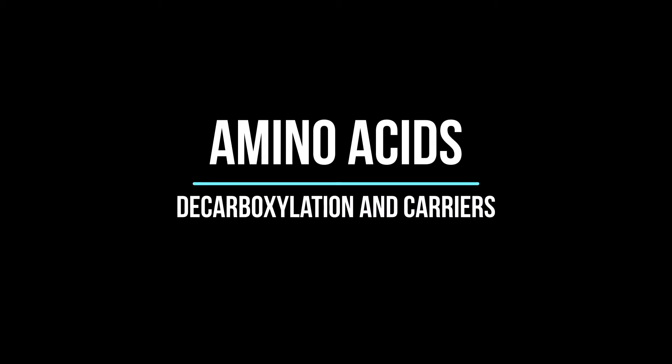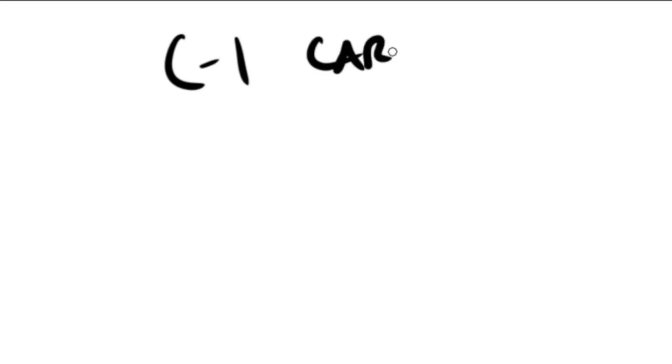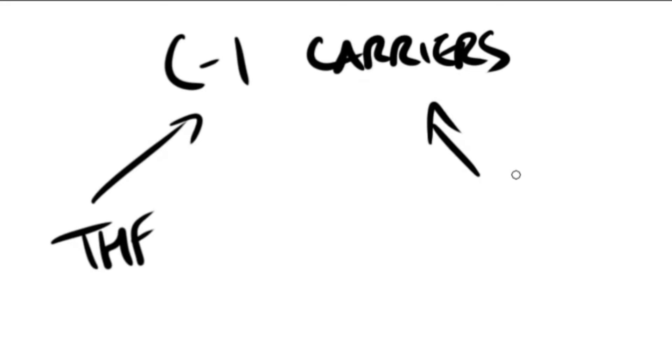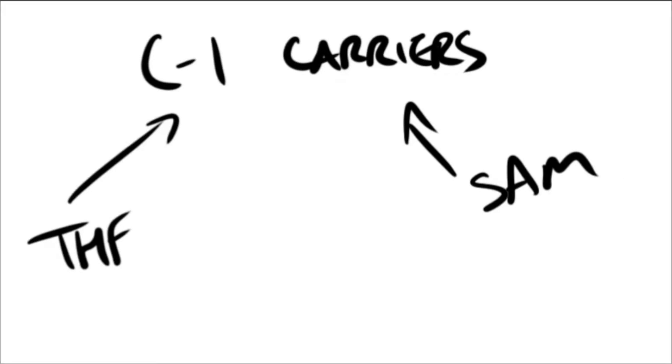Welcome to Leila Teachers. Today we'll speak about the decarboxylation of amino acids and some carriers. Some synthetic pathways require the addition of single carbon groups that exist in a variety of oxidation states, including formyl, methanol, methylene, and methyl. These single carbon groups can be transferred from carrier compounds such as THF, which is tetrahydrofolic acid, and SAM, which is S-adenosyl-L-methionine. SAM will be covered in another video.